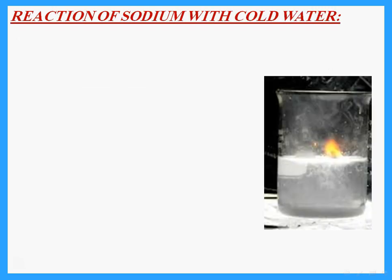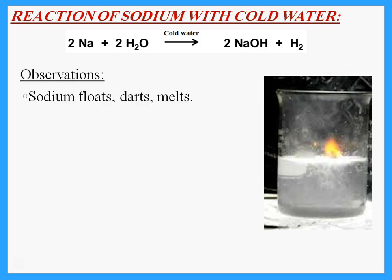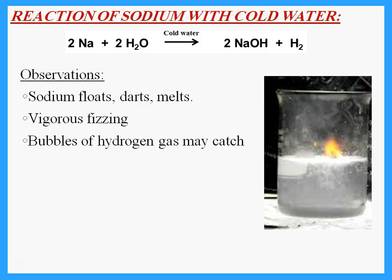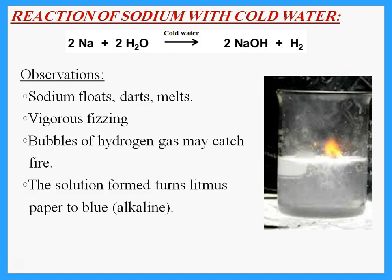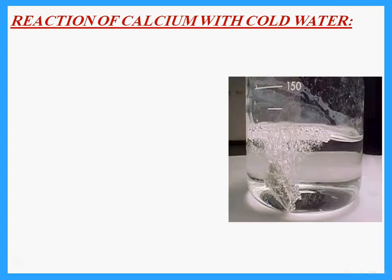Magnesium reacts with steam, giving magnesium oxide plus hydrogen. For sodium in cold water: it gives sodium hydroxide plus hydrogen. Sodium is a low-density Group 1 metal, so it floats; the hydrogen bubbles push it around so it darts. It then starts to dissolve. There is vigorous fizzing, and the hydrogen gas may catch fire. Sodium hydroxide is formed, so the solution is alkaline — litmus paper turns blue.